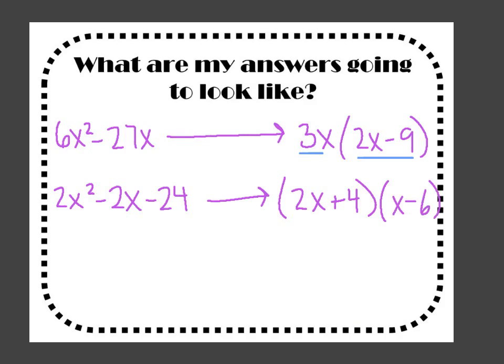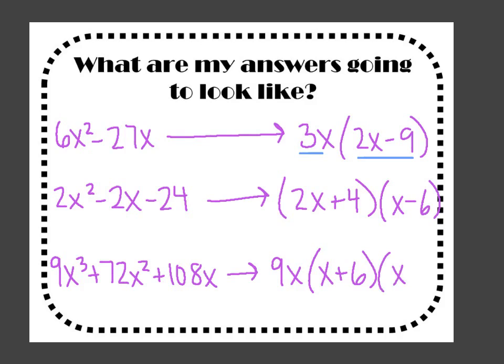We're even going to build up to figuring out what three things were multiplied together to get a polynomial. For instance, if I give you 9x³ + 72x² + 108x, you'll be able to find that the factors are 9x times (x + 6) times (x + 2). That's what we're looking at for this topic.